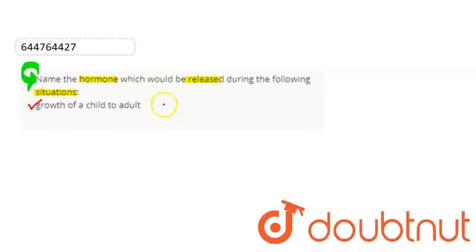So that hormone is growth hormone. This is released during the growth of a child to adult. Most of the time, growth hormone, we call somatotrophin or somatotrophic hormone.